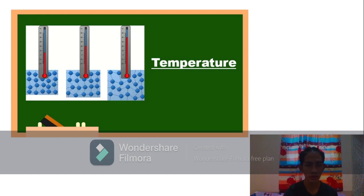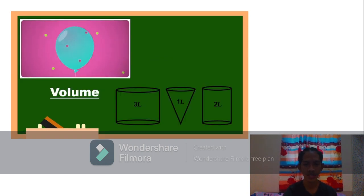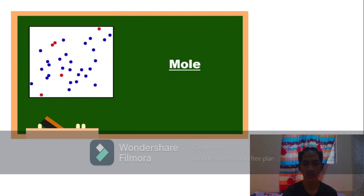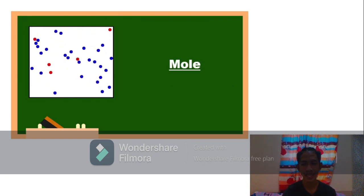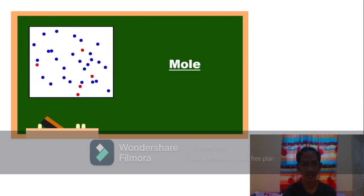Third is volume. It tells us how big the container is. And lastly is mole. Mole tells us how many particles are present in that container.